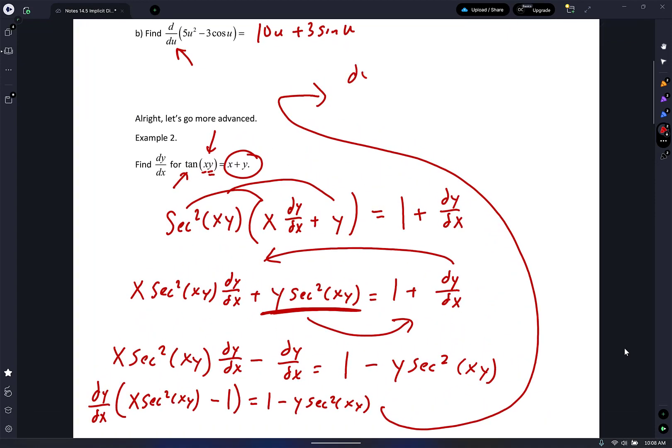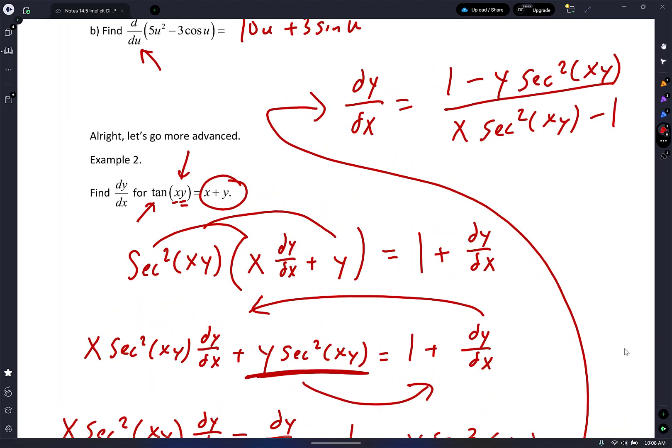So finally, I divide. dy/dx equals (1 minus y secant² xy) divided by (x secant² xy minus 1). Nothing cancels. The most common mistake is you guys want to cancel something. Nothing cancels. I don't have a product, I have a minus something. Unless you can factor something out of the numerator and that same factor out of the denominator, you can't cancel anything. Cool or not cool? That's it. You found your derivative.